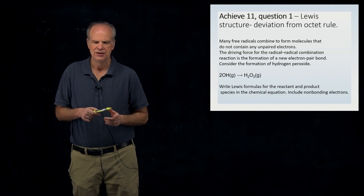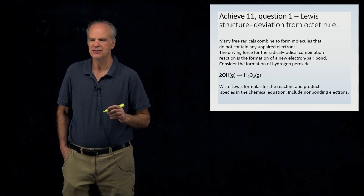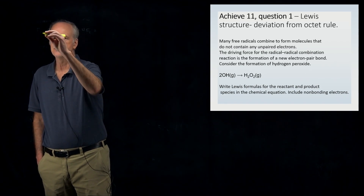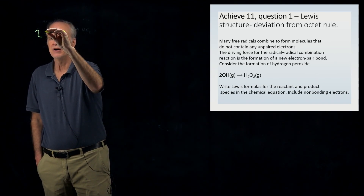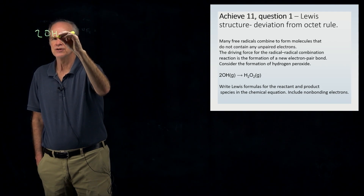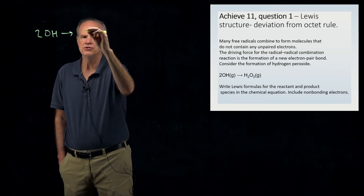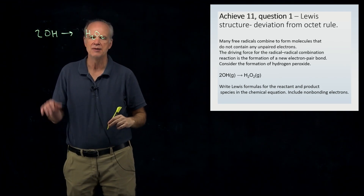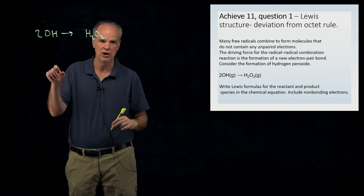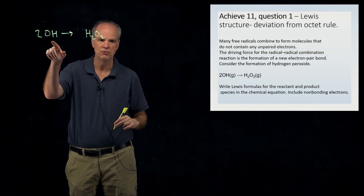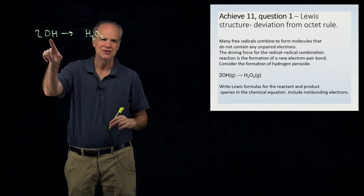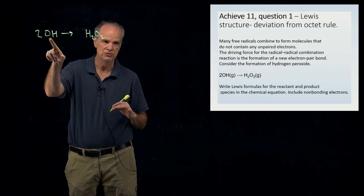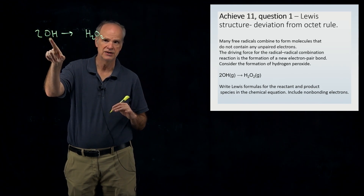This problem is a little unusual. The balanced equation is: 2OH → H₂O₂. There are a number of new things to point out. First, you might think this is hydroxide ion, so let me show you what the equation would look like if it were hydroxide ion — there would be a negative charge.